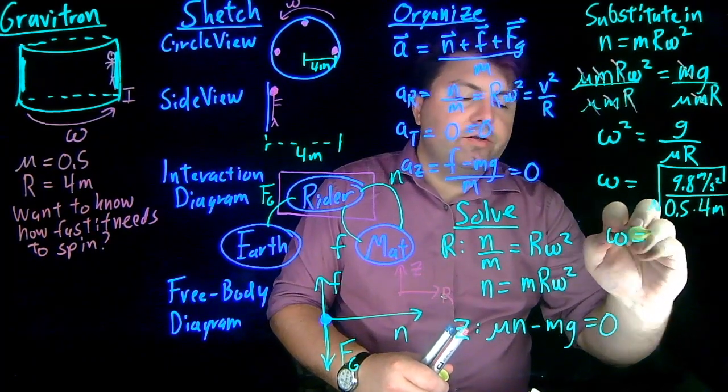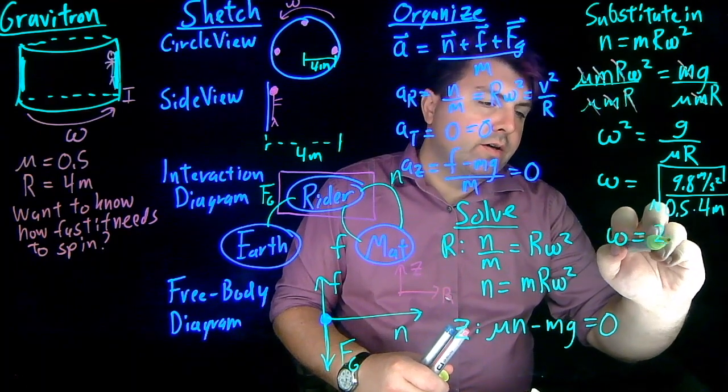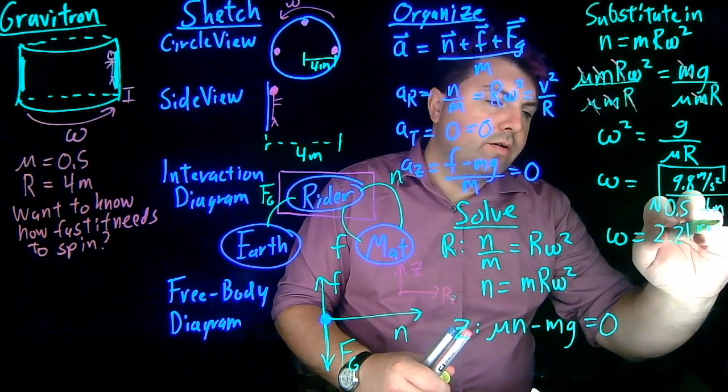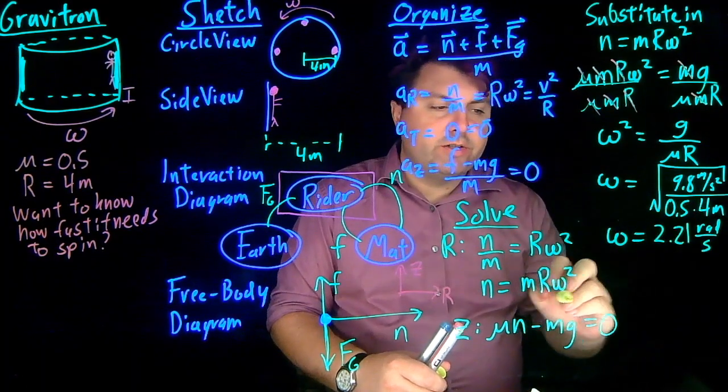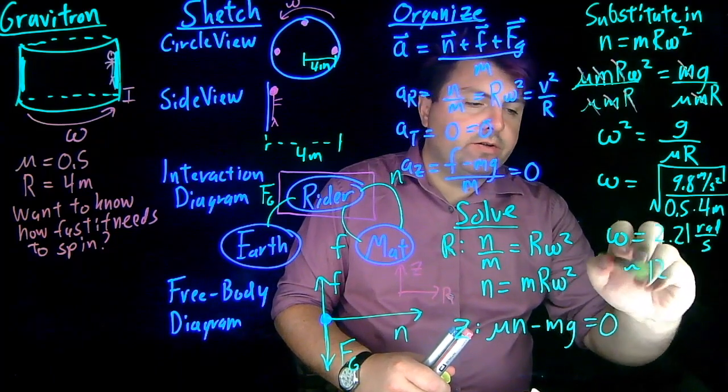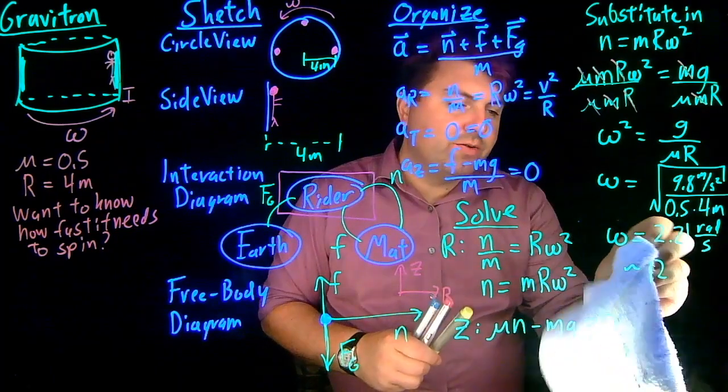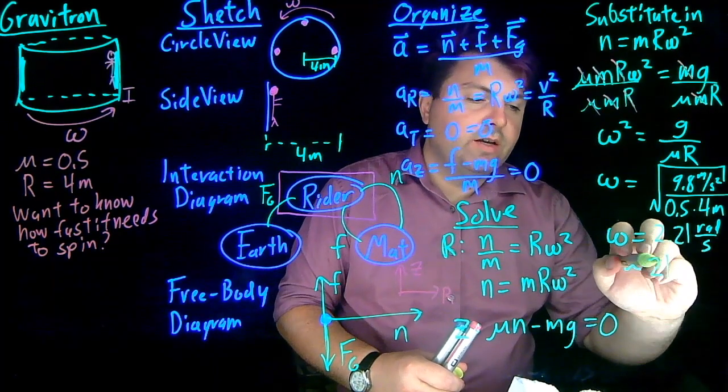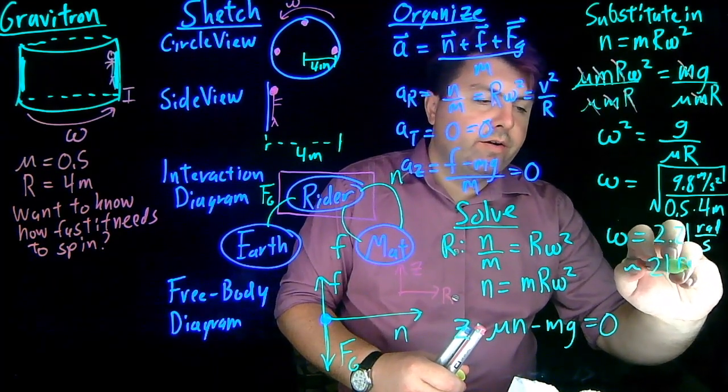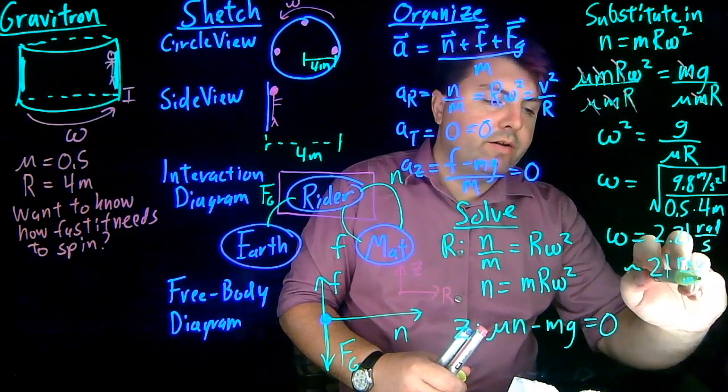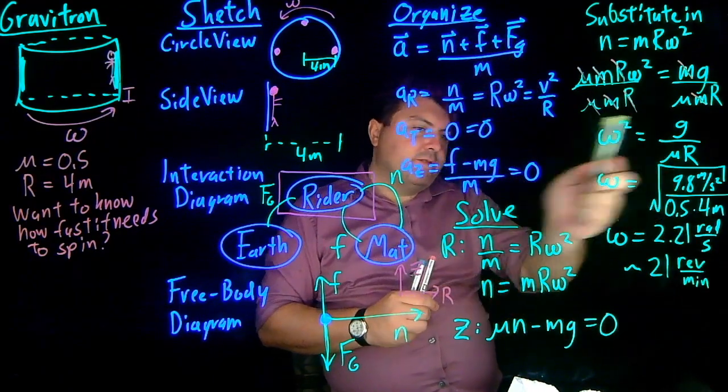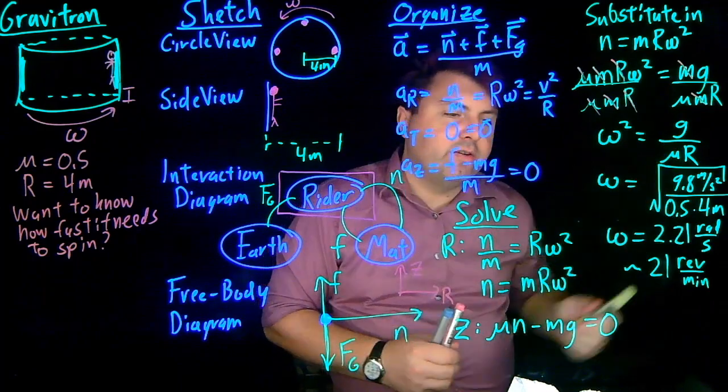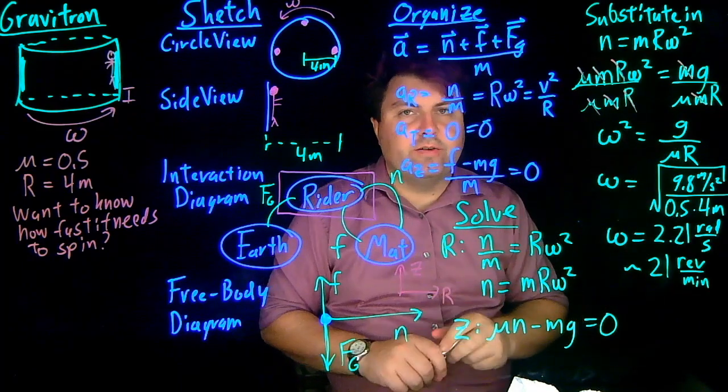So doing a little bit of math, we get that our omega is 2.21 radians per second. This is roughly equivalent to 21 revolutions per minute. So roughly every three seconds, you're completing a revolution, and then you complete 20 or so revolutions in one minute.